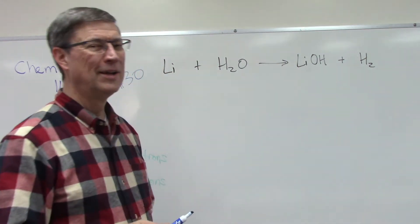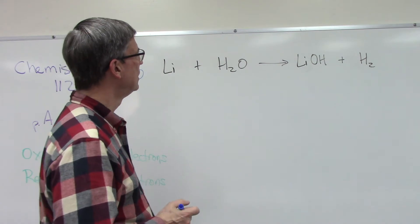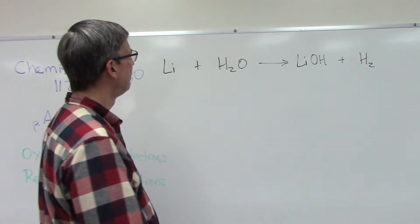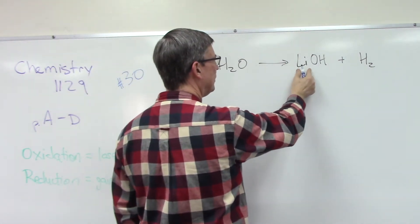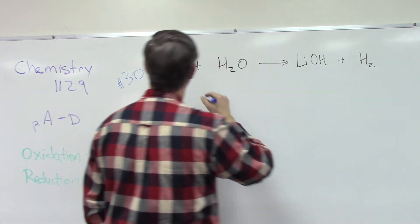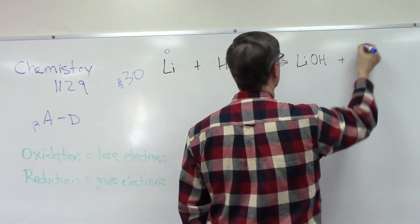First of all, the first step is to write in the oxidation numbers. Actually, the first step was to write the equation. Lithium hydroxide, hydroxide is negative 1, lithium is positive 1, so I only need one of each. So these are elements, so these are zeros.